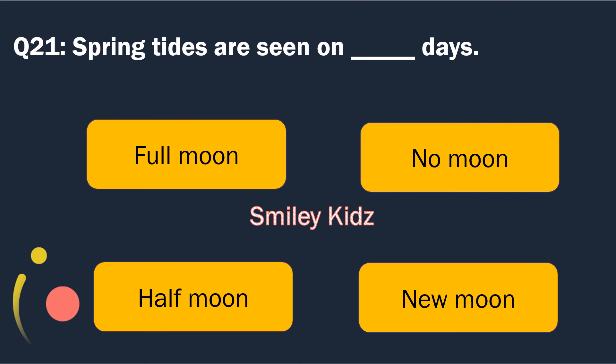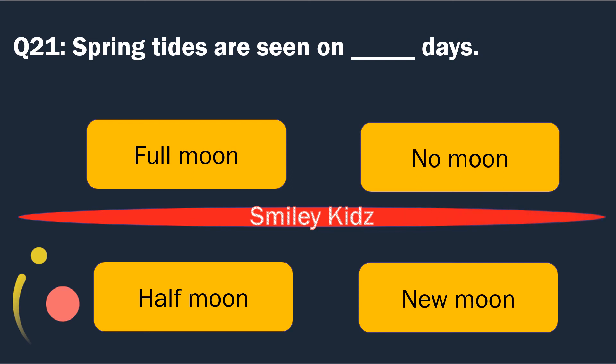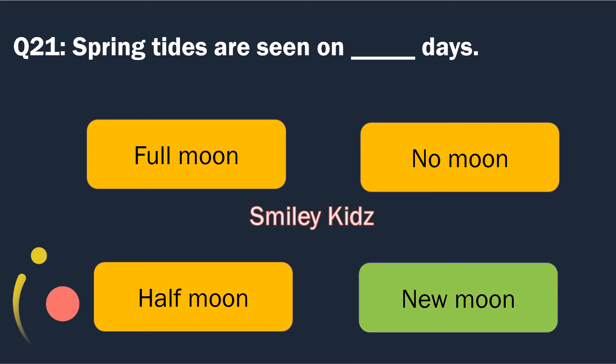Question number 21. Spring tides are seen on the blank. Options are: Full Moon, No Moon, Half Moon and New Moon. The right answer is New Moon. Spring tides are seen on New Moon days.